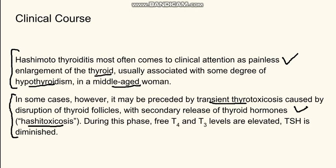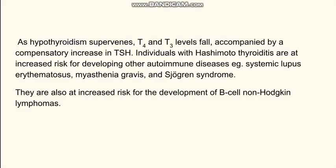When the stored hormones are released, thyroid hormone levels are increased. However, when injury leads to permanent damage of the thyroid epithelium, T3 and T4 fall down, and there is permanent hypothyroidism. So the progression is: firstly sometimes hyperthyroidism, then normal thyroid function, and then hypothyroidism.